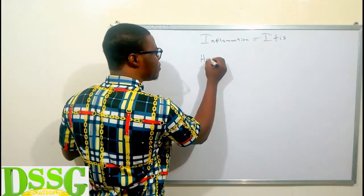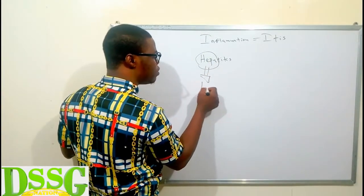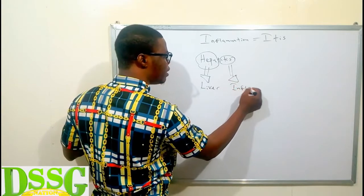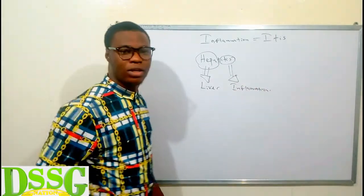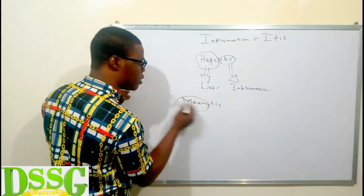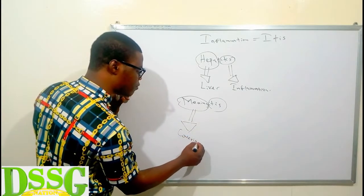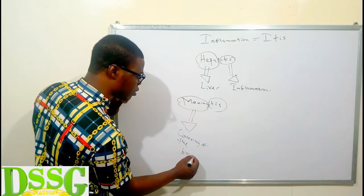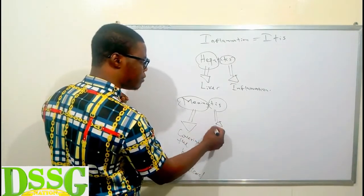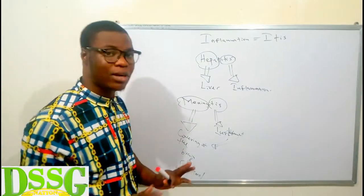For example, if you see 'hepatitis' — we know that 'hepa' denotes the liver — so hepatitis means inflammation of the liver. Another example is meningitis. The meninges are the coverings of the brain and spinal cord, and 'itis' means inflammation. So meningitis means inflammation of the coverings of the brain and the spinal cord.